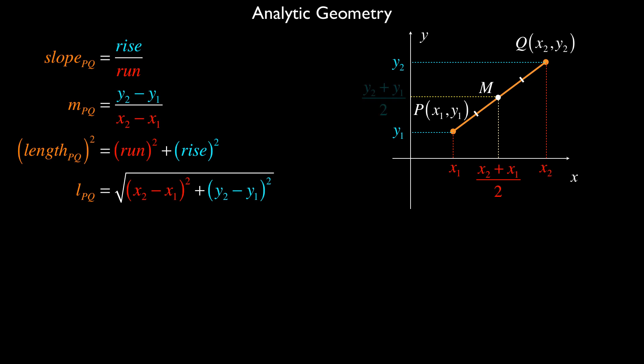Similarly, we would do the same thing for the y-coordinate. So we'd have y2 plus y1 all over 2. And so we have a formula for the midpoint, which is (x2 plus x1 over 2, y2 plus y1 over 2). And those are the three key formulas that we're going to use to answer a lot of our problems in analytic geometry.